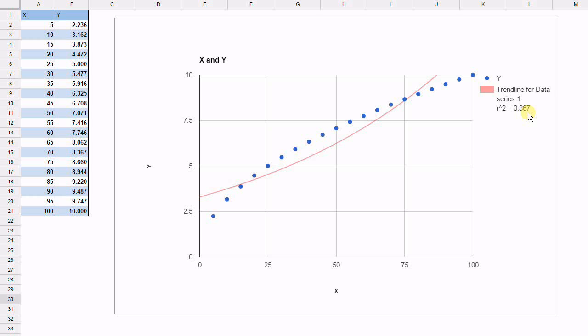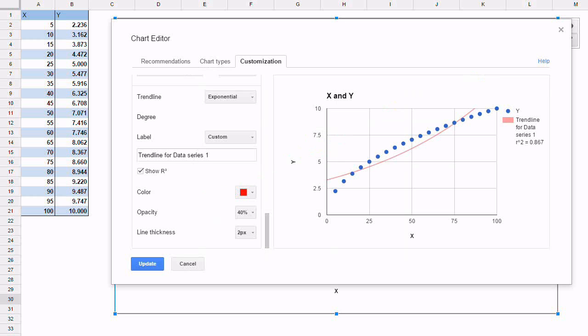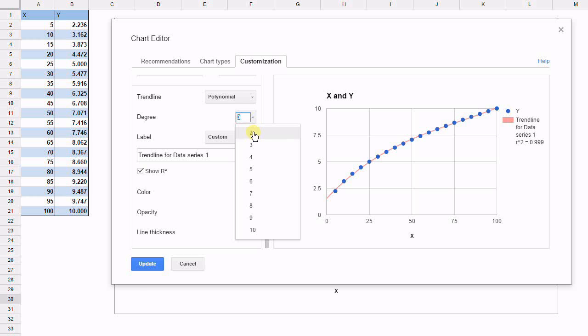So let's finally try the only other option we have left, which is the polynomial. So we select the polynomial, and we're actually given the number of degrees that we can use. So we can go from as low as 2, which would mean that the values would be set up as x squared, x, and a constant.